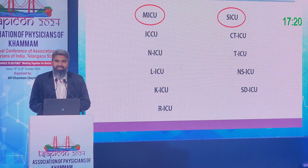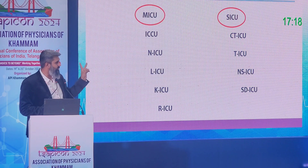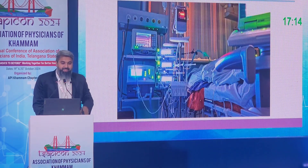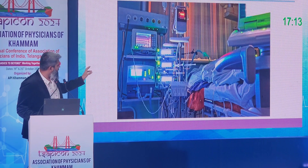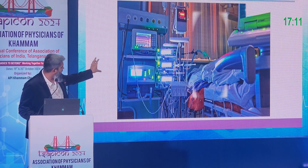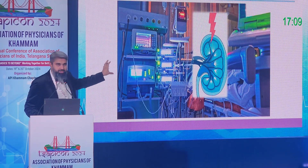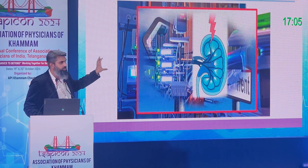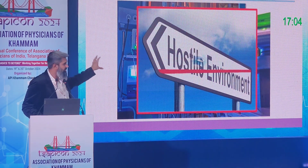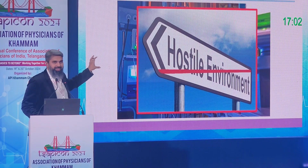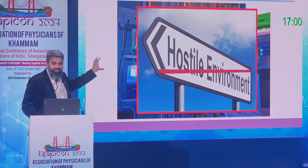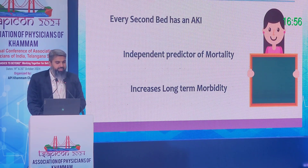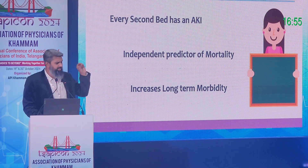The ICU is a designated area in a hospital where critical patients are cared for. There are many ICUs nowadays, but to keep it simple there are two main types: medical ICU and surgical ICU. The ICU environment is very hostile for the kidney, because whatever goes into the patient's body is metabolized and excreted by the kidney — making AKI present in virtually every second ICU bed.